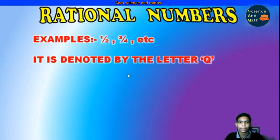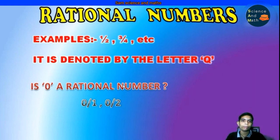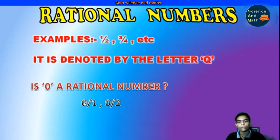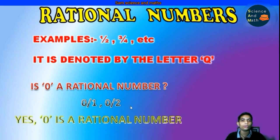A question arises: is 0 a rational number? Yes, 0 is a rational number. We can write 0 as 0/1 or 0/2. The answer for these is 0 itself. Here you can see it is in the form of P/Q, where P and Q are integers and Q is not equal to 0. Hence 0 is also a rational number.